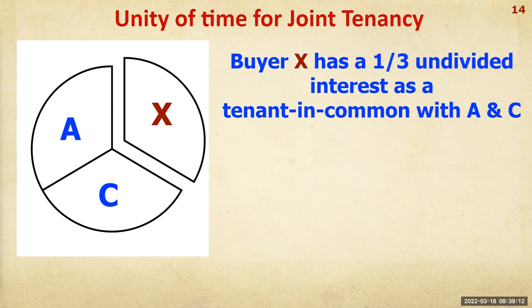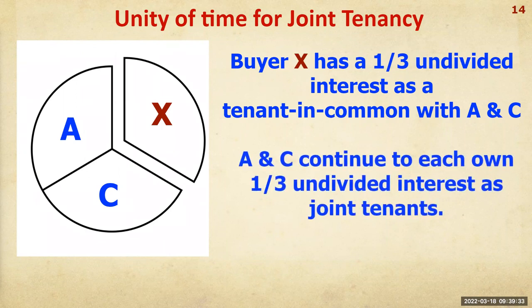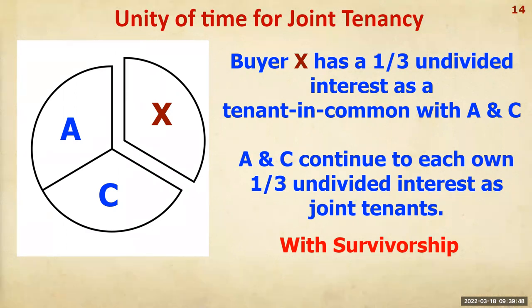If A dies, C gets A's share. If C dies, A gets C's share. But if X dies, his property goes to his heirs — because X is not a joint tenant due to lacking unity of time. A and C continue to each own one-third undivided interest as joint tenants with survivorship, while X owns as a tenant in common with no survivorship.